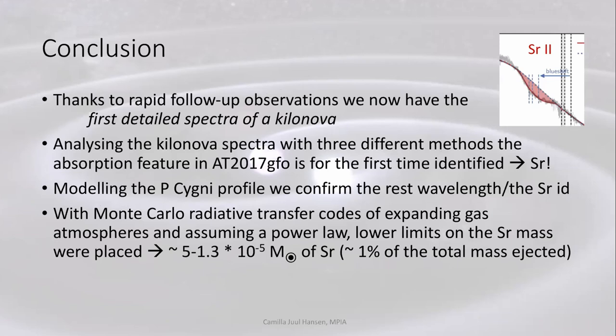With this, I come to my conclusions. Thanks to the massive follow-up campaign, we now have very detailed, broad-range electromagnetic spectra of the kilonova that we can analyze. We have analyzed and identified the absorption feature using three different independent methods, and it allowed us to find strontium. This was also confirmed by the rest wavelengths of the P Cygni profile, namely identifying the strontium lines just at 1 micron. Using this Monte Carlo radiative transfer code, assuming a power law, we could put lower limits on the mass of strontium ejected, which actually corresponds to about 1% of the total mass. Thank you.